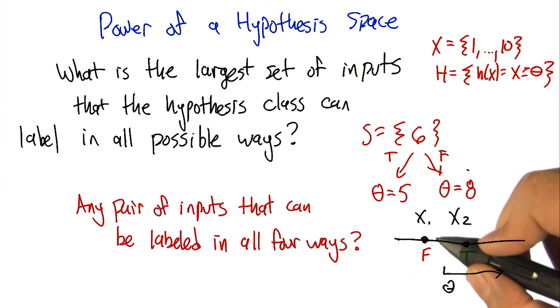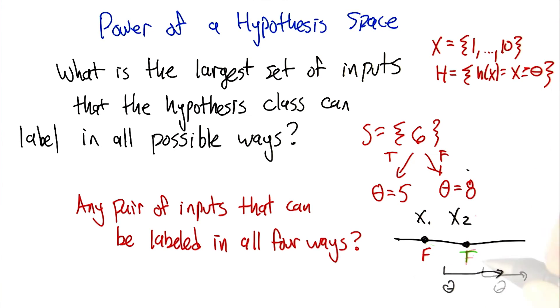Then, as we move theta to the right, x1 eventually gets labeled false—that's two combinations. We keep moving theta to the right, and now x2 is labeled as false. So we've seen three of the combinations, but which combination didn't we see?